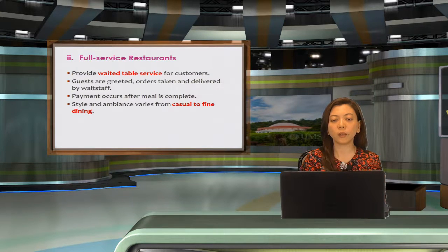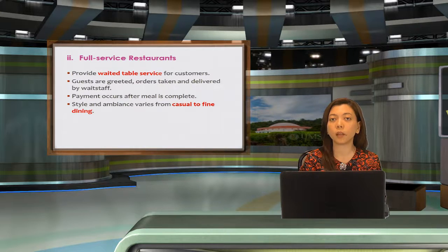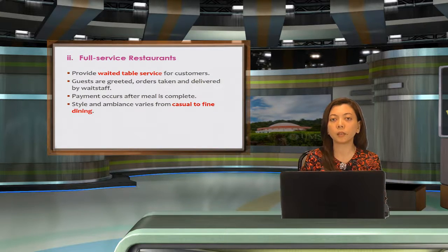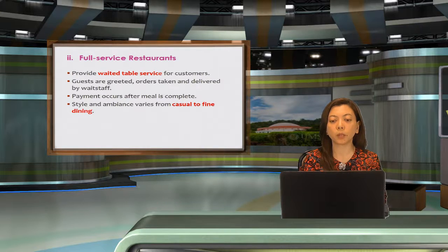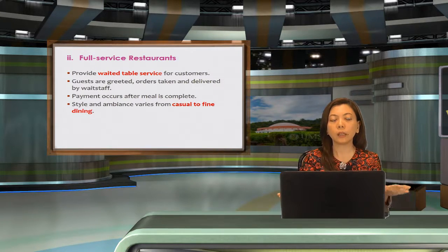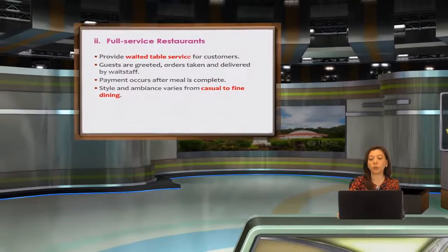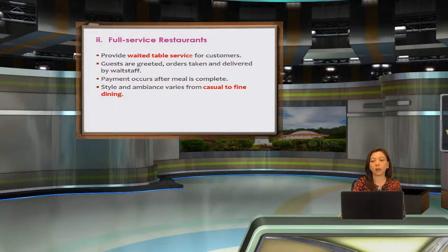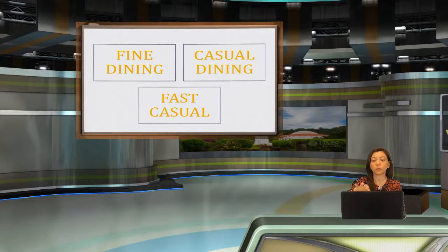The second type is a full service restaurant, which provides waited table service for customers. Guests are greeted, orders are taken, and when ready, food is delivered by wait staff to the table. Payment normally occurs after the meal is complete. The style and ambience vary from casual to fine dining. Full service restaurants can be divided into three types: fine dining, casual dining, and fast casual.